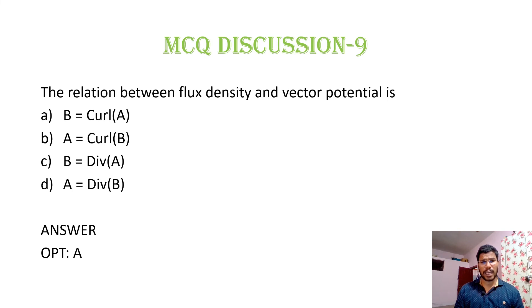MCQ 9: The relation between flux density and vector potential is: option A, B = curl A; option B, A = curl B; option C, B = divergence of A; option D, A = divergence of B. The relation between flux density and vector potential is B = curl A. Option A is correct.